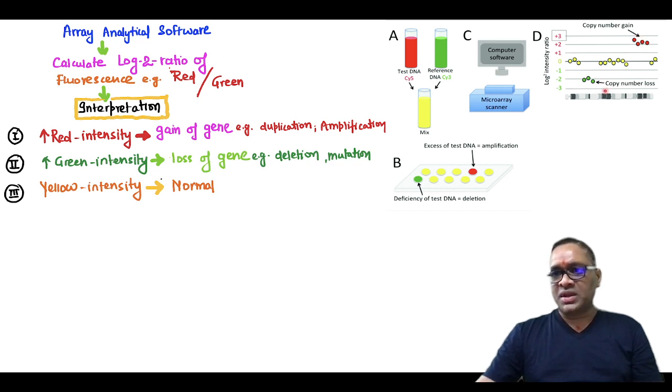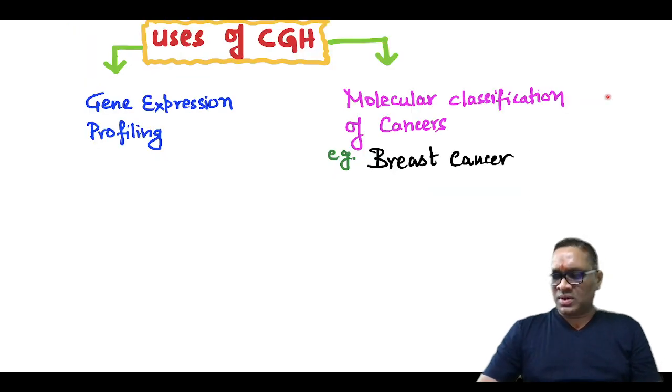What is the purpose of comparative genomic hybridization? It is used for gene expression profiling and molecular classification of cancers like breast cancer. Enjoy learning and best wishes.